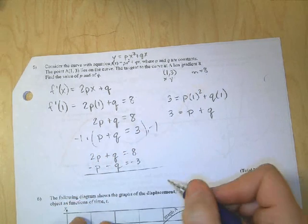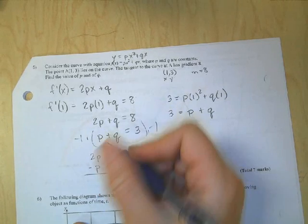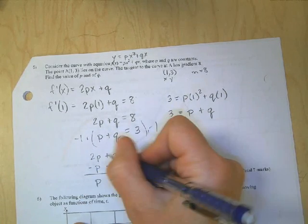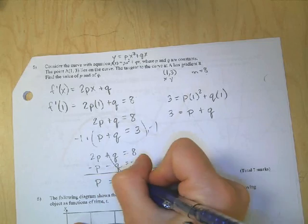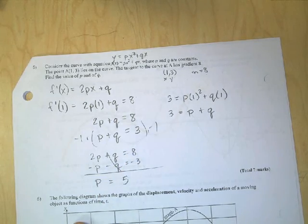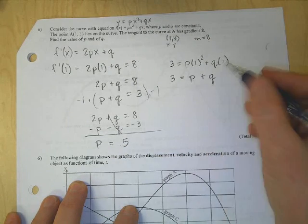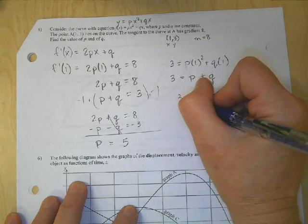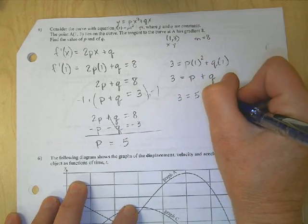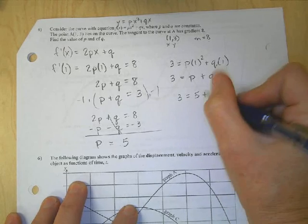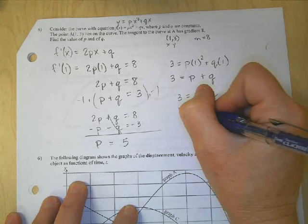Combine my like terms. 2P minus 1P is 1P. The Qs are eliminated. Equals 5. I already found P. So now to find Q, I just need to plug that back into one of my equations. I'll use this one: 3 is equal to 5 plus Q. Subtract 5 from both sides. I get Q is equal to negative 2.